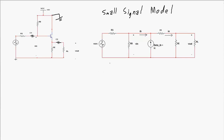Here is the circuit redrawn as the small signal model. The voltage source and RS resistance are on the left. The base resistor now goes to ground. The collector is connected straight to ground, with a current source inside the collector branch. At the emitter is the little re — the internal resistance between base and emitter inside the transistor — and connected to the emitter externally are the emitter resistance RE and the load RL, with the output voltage measured across the load.